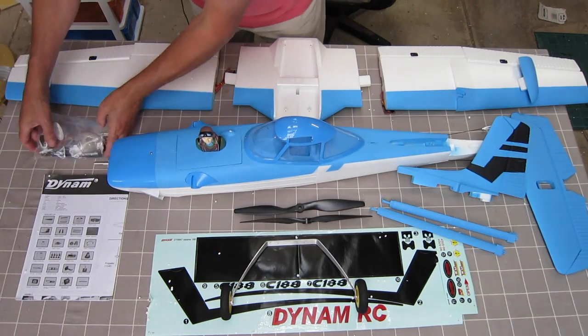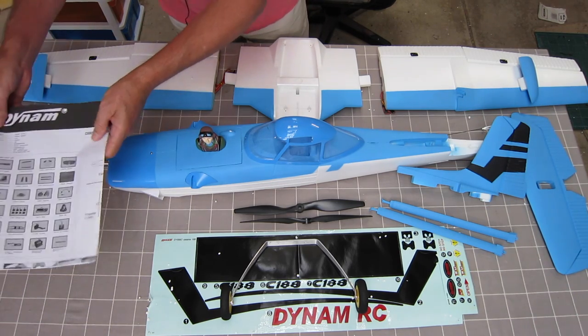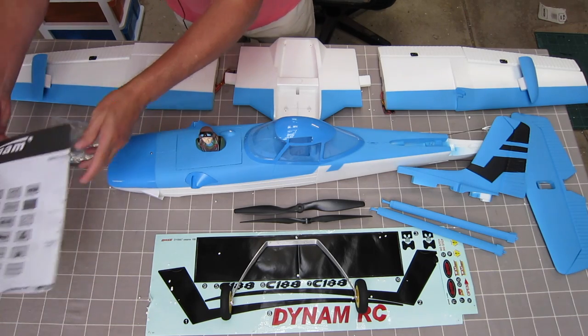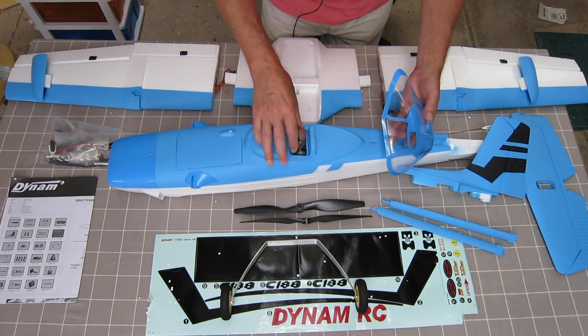Landing gear, bits and pieces including some wing joining carbon fiber and a bit of an instruction manual there. All looks really nice quality, little canopy there and a pilot.